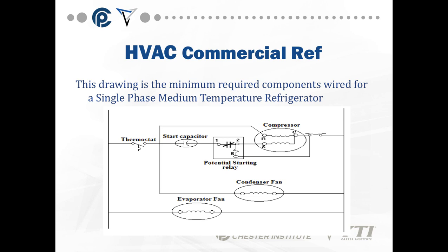This drawing is the minimum requirement for a single-phase medium-temperature refrigerator. I have to have a thermostat to control the box, a start capacitor using either a potential relay or a current coil relay. We have our compressor with a run, start, and common winding, a condenser fan that's most often a shaded pole, and an evaporator fan. When the thermostat calls for cooling — it gets warm, closes — it energizes my compressor run winding and start winding until enough back EMF is generated to energize the potential relay, taking the start winding out of the motor. This is a CSIR motor.